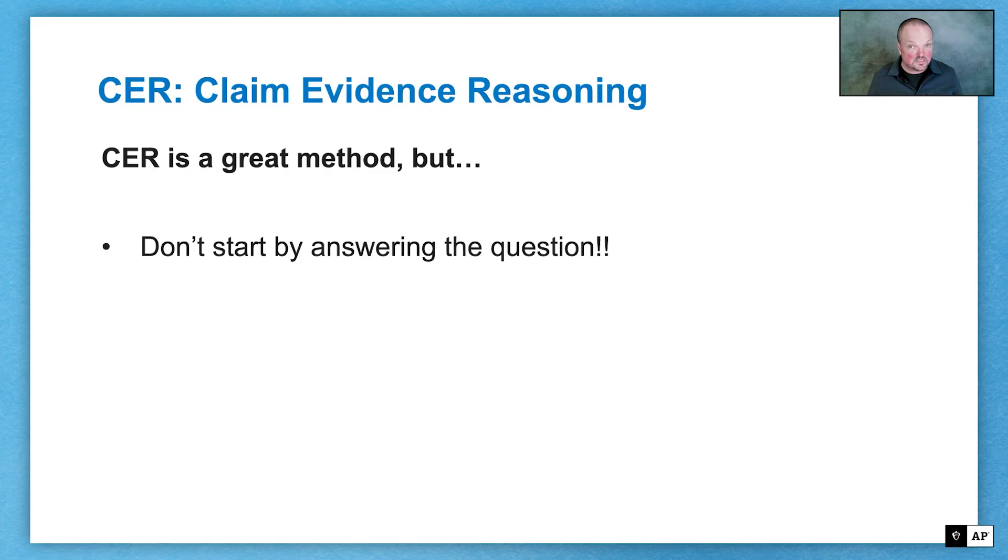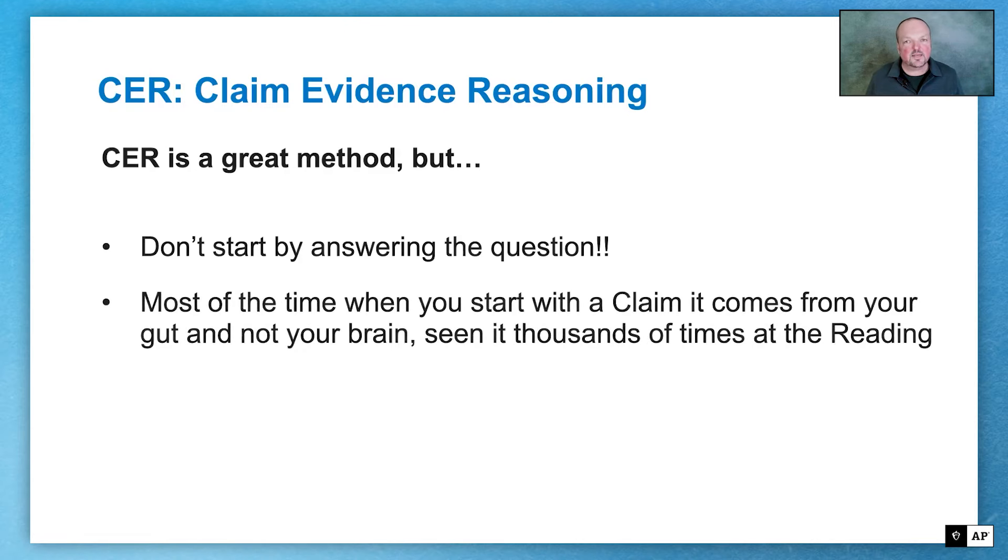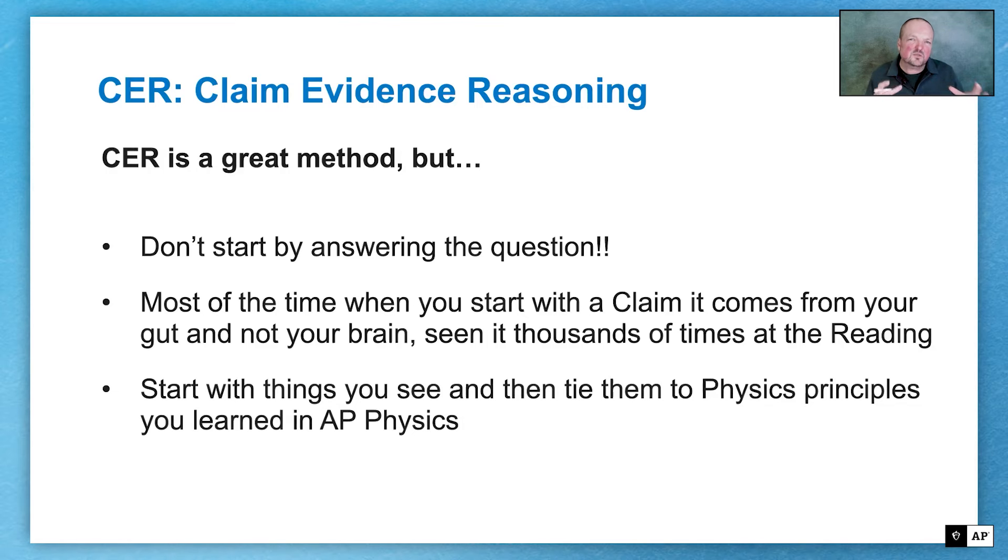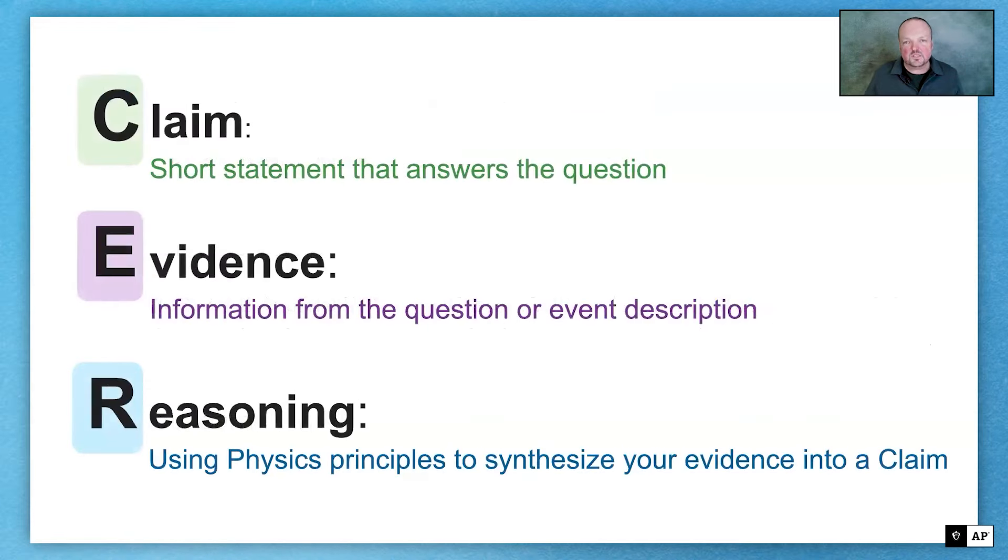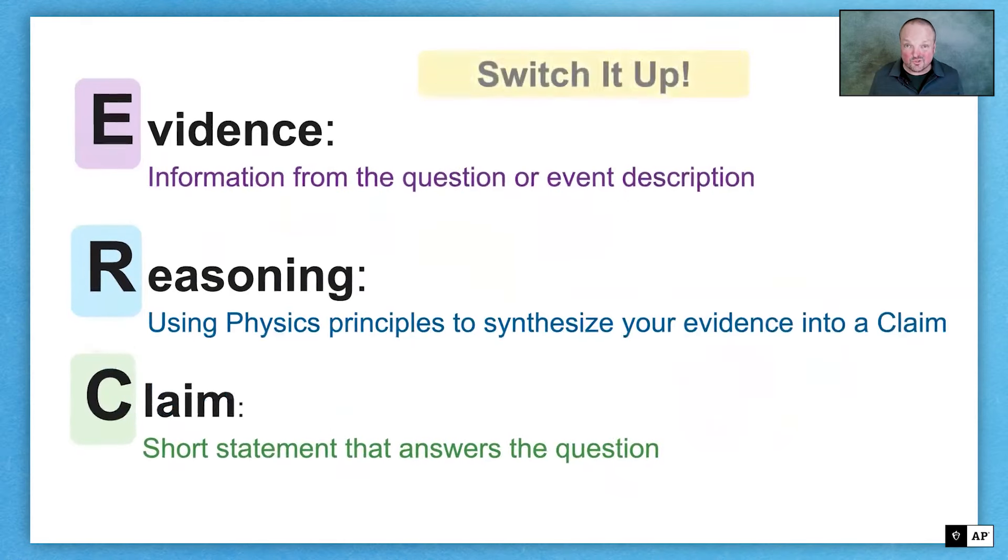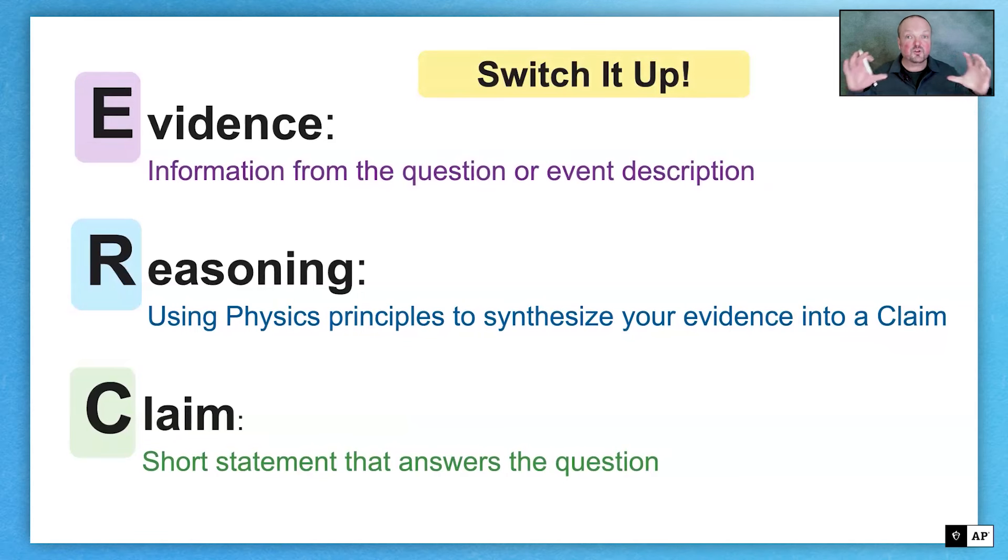And this is my suggestion: think about the order that you do claim evidence reasoning. I don't think making the claim at the beginning is the best approach. I think having the claim at the end is the best approach for two reasons. One is that you just have a gut answer at the beginning when you look at the question, and then you just write it down, and then you just force physics to go that direction, even though it doesn't want to go. Instead, say all of the evidence and the physics things, and then make the claim. Another reason for this is that if you're not focusing on all the things that you see, the evidence, and all the reasoning, you may not say all the things, get all of the points. So my suggestion is to take that claim evidence reasoning order and do a little switcheroo, and have evidence, then reasoning as your focus points, and then the claim at the end.